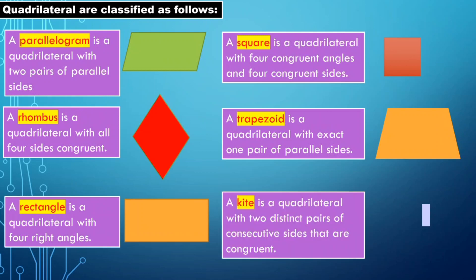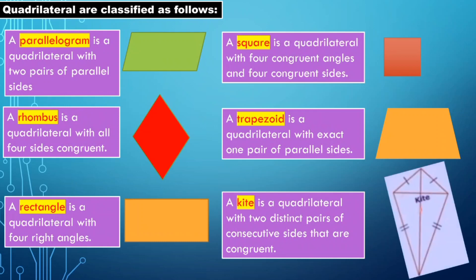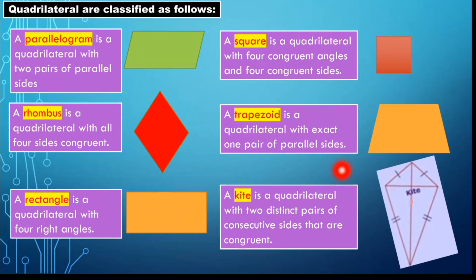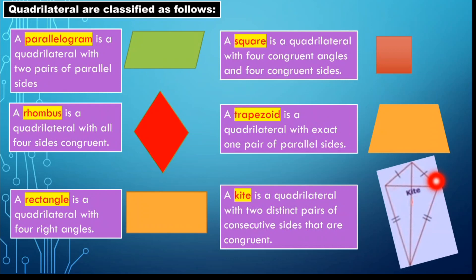Next, we have a kite. A kite is a quadrilateral with two distinct pairs of consecutive sides that are congruent. Looking at the illustration, the first pair of consecutive congruent sides is in the upper part, and the second pair is in the lower part. These are the two distinct pairs of consecutive sides that are congruent.